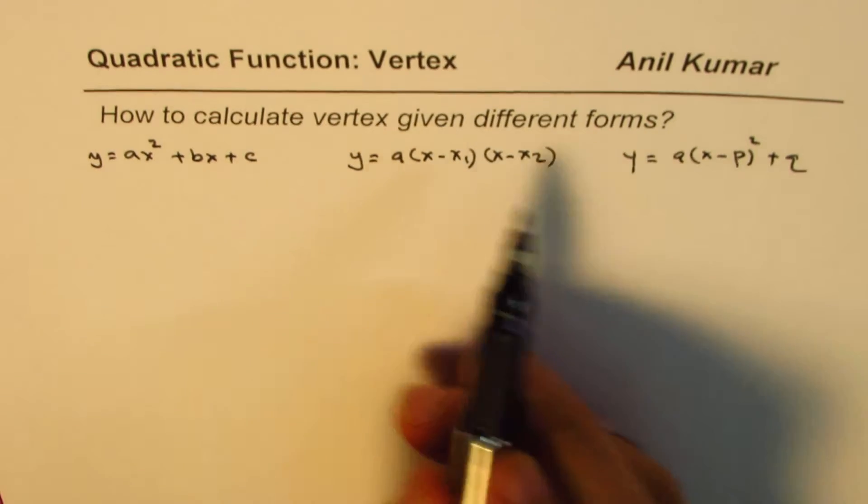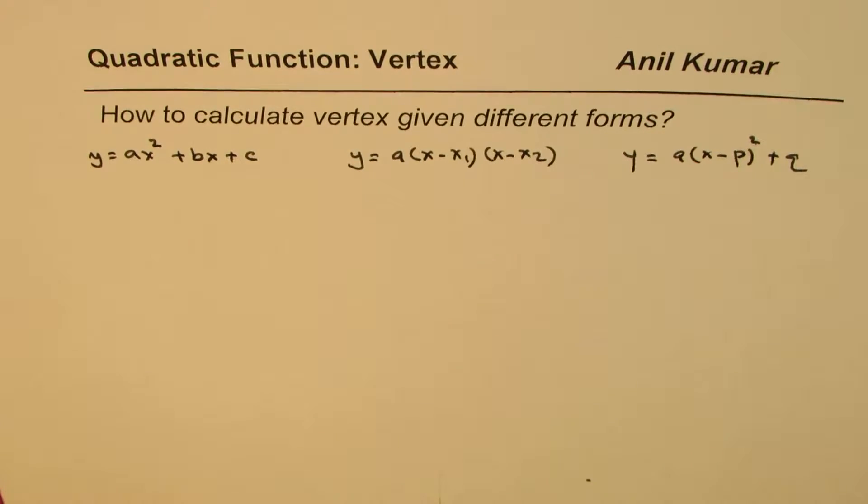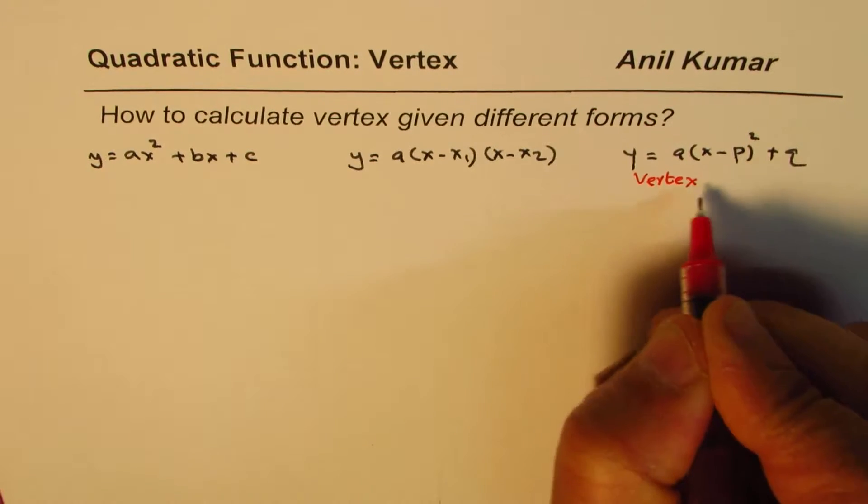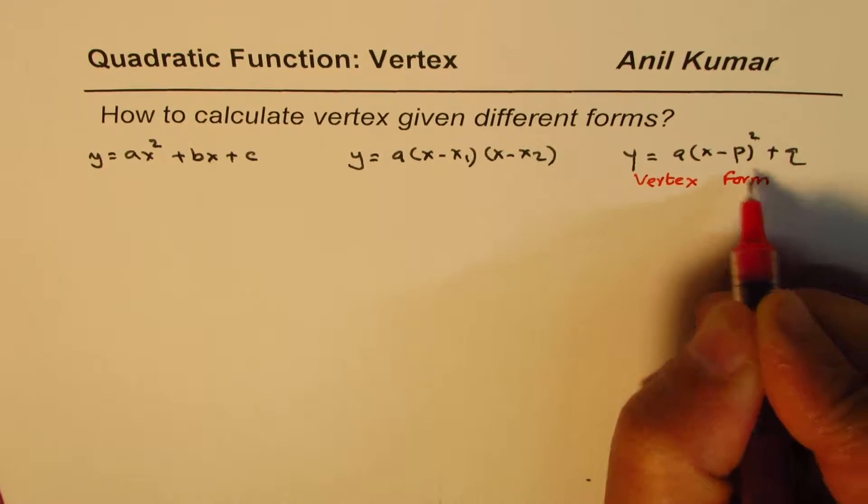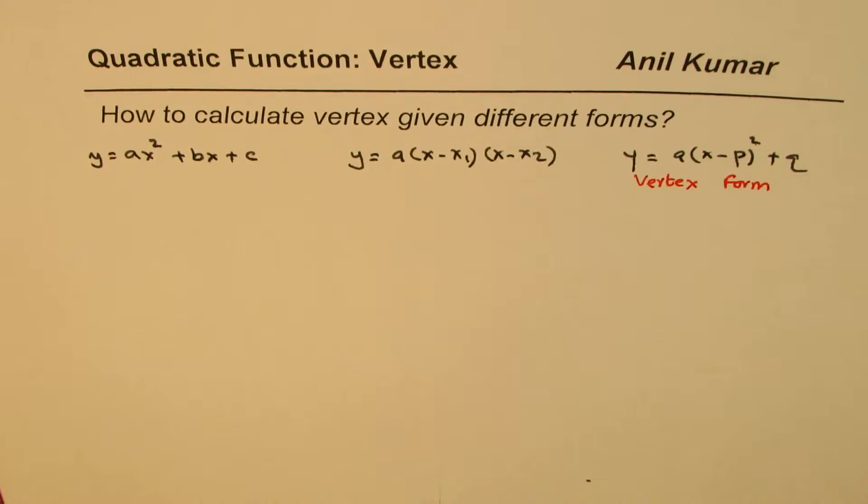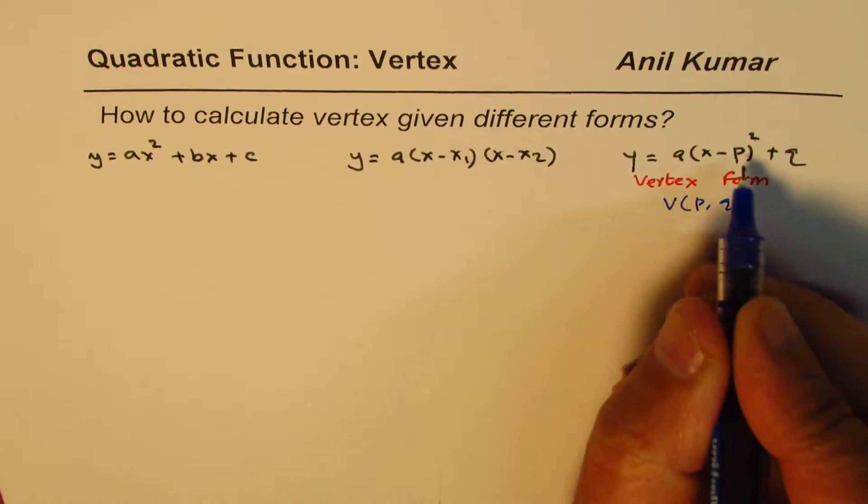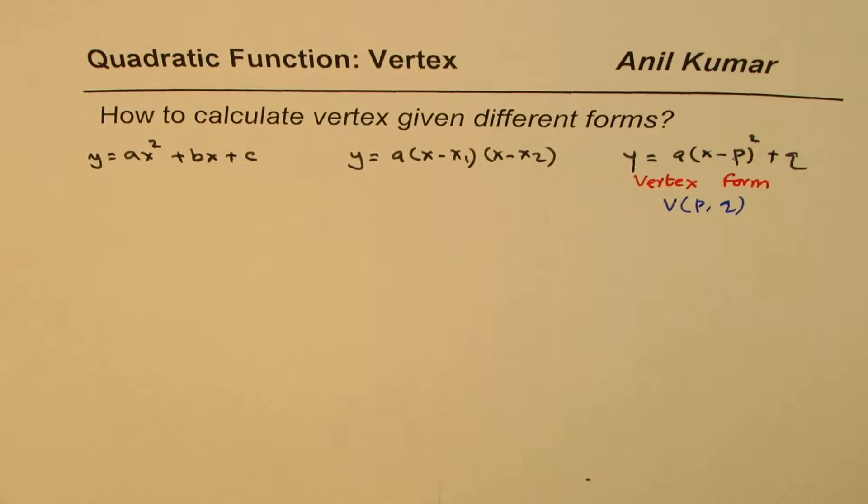To find vertex, that is the best form. So this is the vertex form. We'll begin from the right side, vertex form. In vertex form you can straight away read the vertex and the vertex will be (p, q). So that is the vertex for you. Simple.